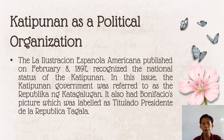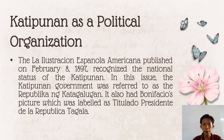La Ilustración Española Americana, published on February 8, 1897, recognized the national status of the Katipunan. In this issue, the Katipunan government was referred to as the 'Republica Katagalugan,' and it also featured Bonifacio's picture titled 'Presidente de la Republica Tagala.' This is why some believe Andres Bonifacio was the first president of the Philippines — because the Katipunan was recognized internationally.